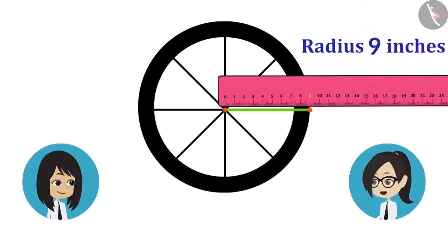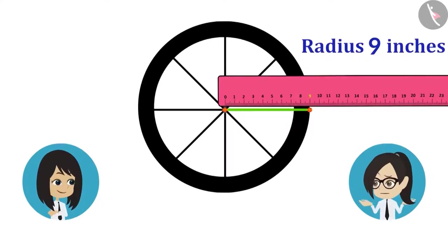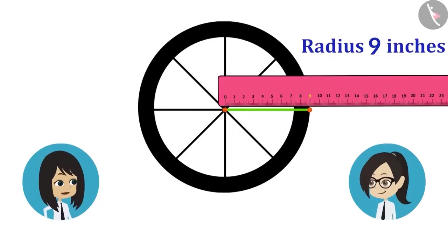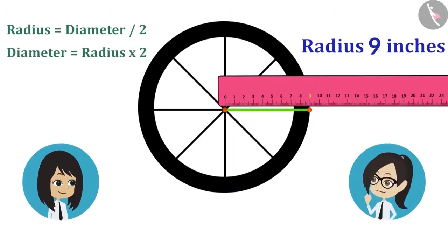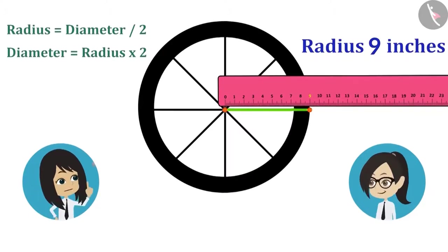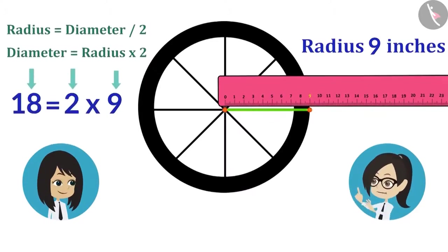Let's now measure its diameter as well. Why do we need to measure it? We can find it only by measuring the radius. The radius is also called the half of diameter, which means that the diameter will be twice the radius. So if we multiply the radius by 2, then the measure of diameter will be known. Radius is 9 inches multiplied by 2, which is 18 inches. So the diameter of the wheel of our bicycle is 18 inches.